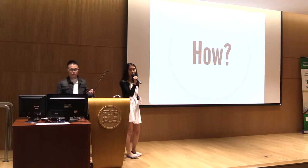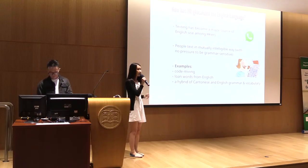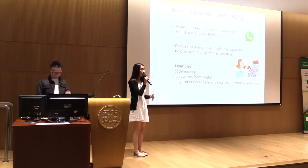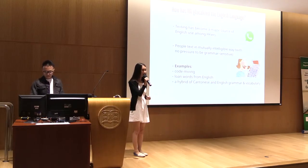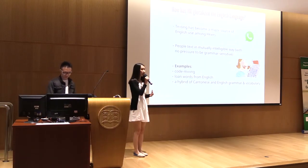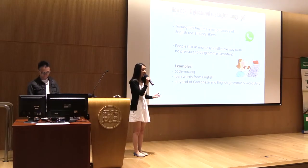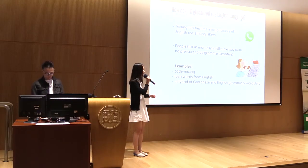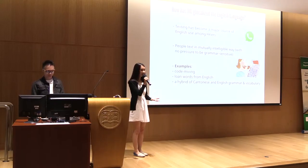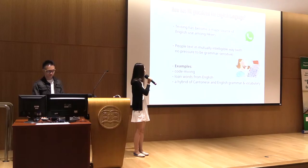How has Hong Kong glocalized the English language? In this era, because of technological advancement, texting seems to have become the major source of English used among Hong Kong people. People may find typing in English more convenient than Cantonese, and may text in a mutually intelligible way — finding a common language easily understandable by both parties. In such a relaxed situation as texting, people feel less pressure to be aware of the grammar they are using, and so these examples exist.